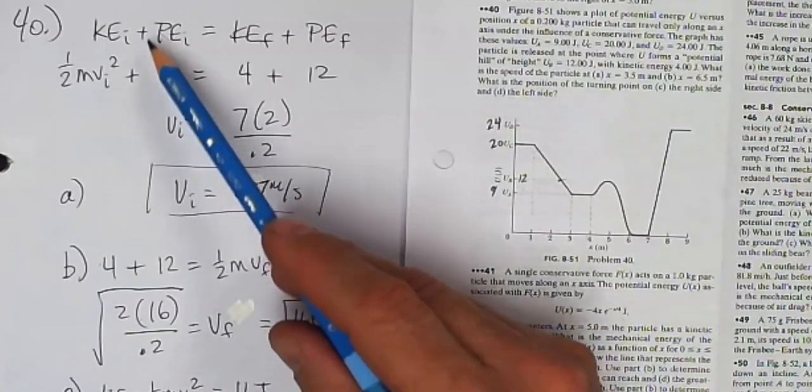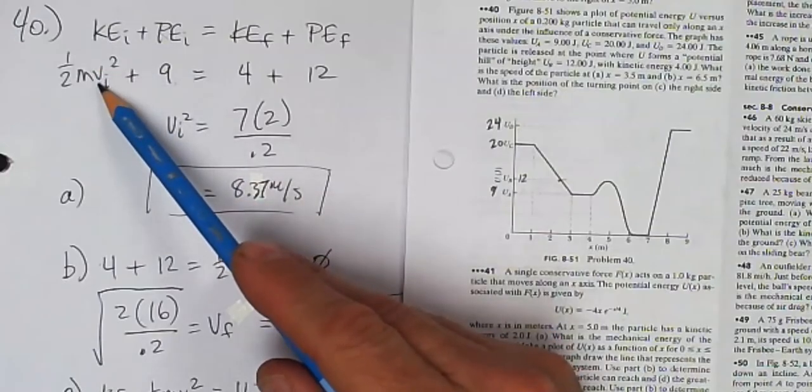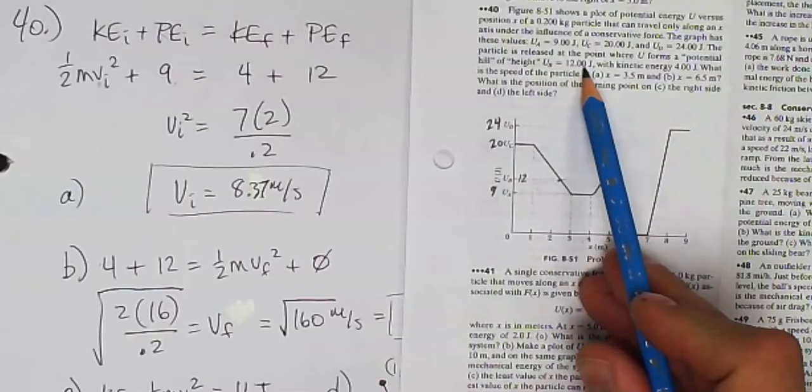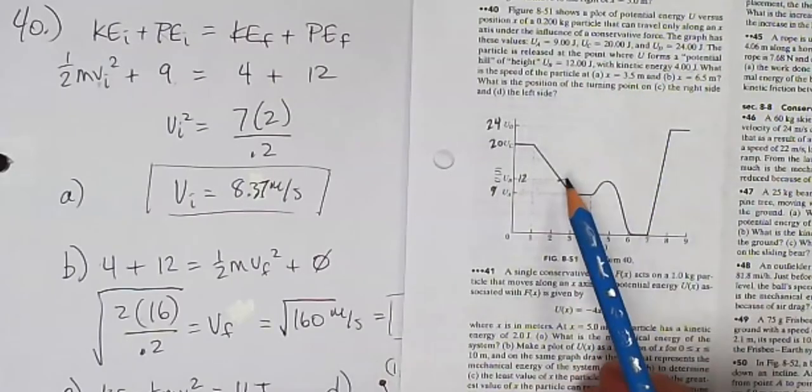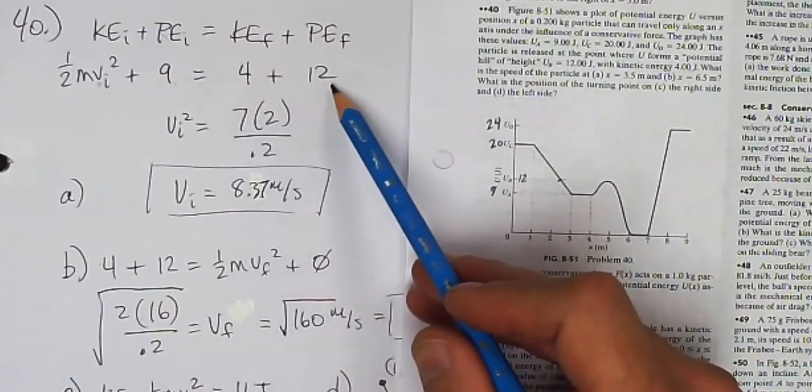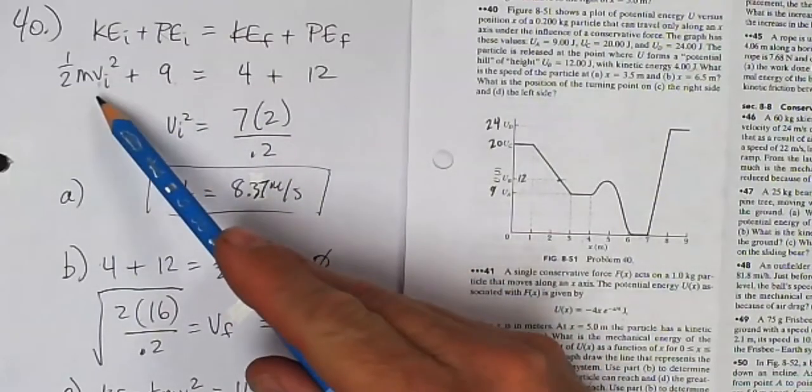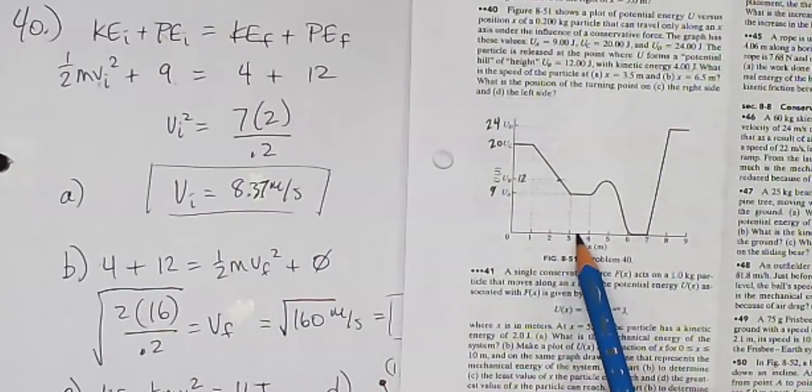So that's the V in the K term. So this is what I'm solving for. At point B, I know I have 12 joules of potential energy and 4 joules of kinetic energy. So that tells me my total mechanical energy is 4 plus 12 or 16 joules. So I'm going to solve this equation now for V. And I see that it is moving at 8.37 meters per second when it is located at this spot right here.